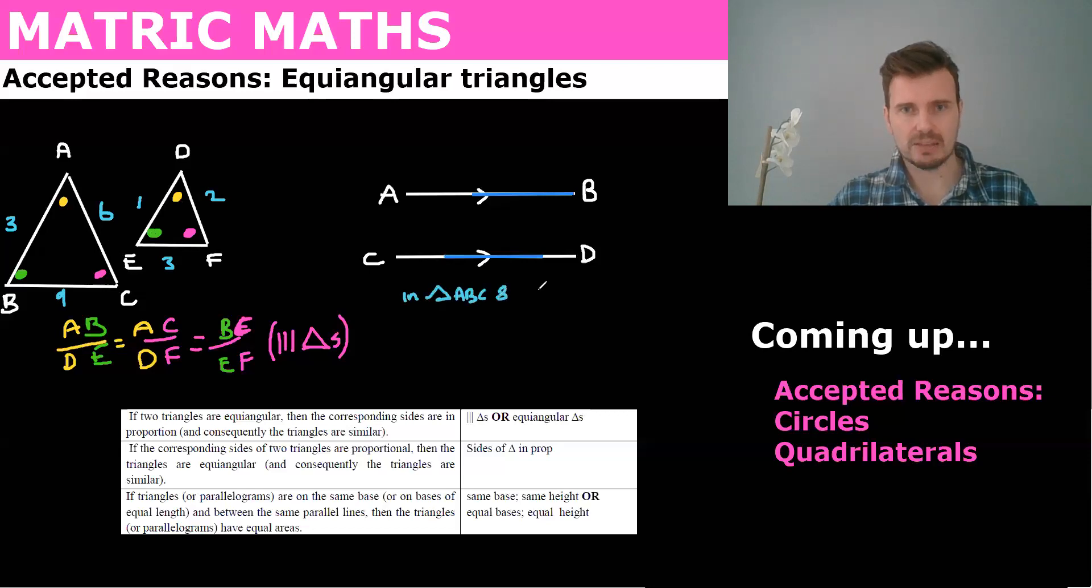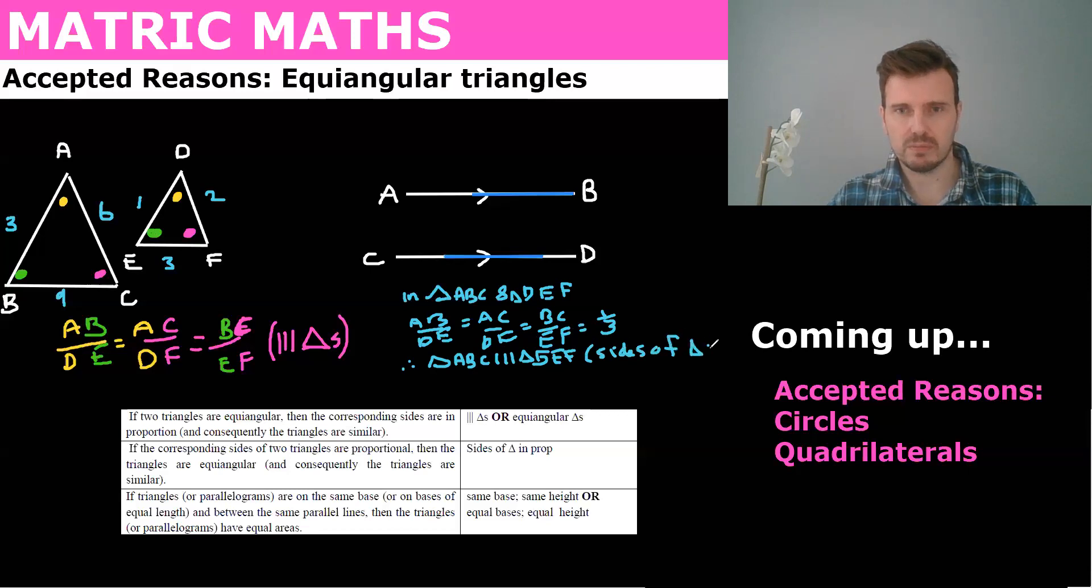triangle ABC and DEF if we could say that AB over DE equals AC over DEF equals BC over EF equals a third. So we would use those numbers. We would see that it's a third. Then you can say, therefore triangle ABC, similar to triangle DEF and the reason is sides of triangle in proportion.